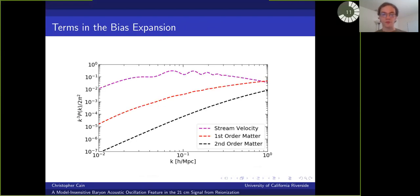So here I'm showing the three power spectra that enter our bias model. And importantly, the amplitude of the stream velocity term is a couple orders of magnitude larger than the linear matter power spectrum at scales where the BAO features are prominent. So even the small effect that we see in our simulations may produce a coupling large enough to leave a detectable imprint on the signal.